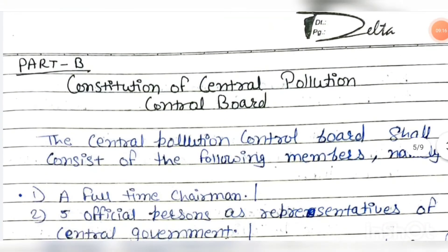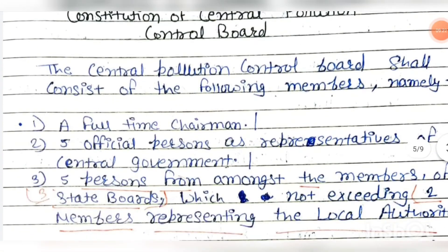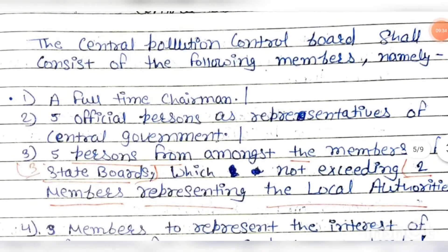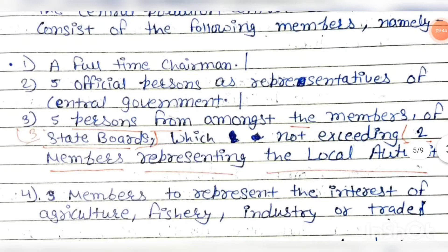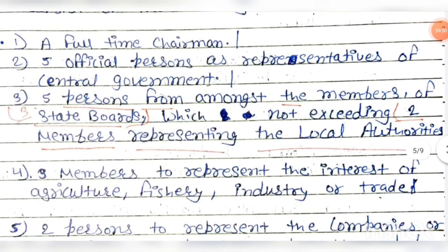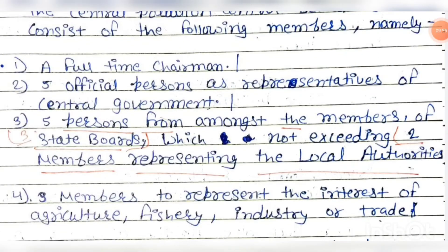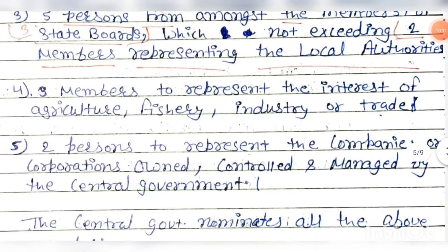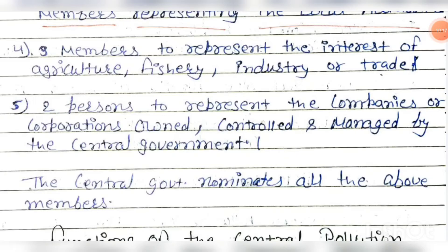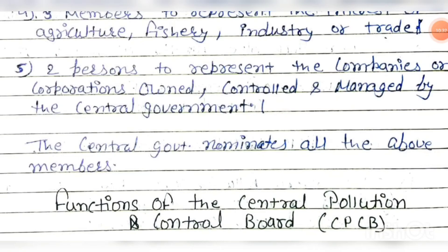The Central Pollution Control Board (CPCB) shall consist of the following members: a full-time chairman; five official persons as representatives of the central government; five persons from among the members of state boards, not exceeding two members representing local authorities; three members who represent the interests of agriculture, fishery, industry, and trade; and two persons representing companies and corporations owned and managed by the central government. All the above members are nominated by the central government.